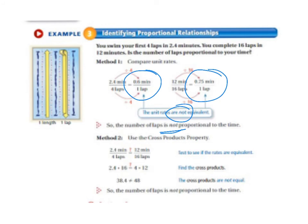Method 2, you're going to use the cross products property. So this is one of those things where you can do either one. So you line up your two. You have to be sure that you have minutes on the top and laps on the bottom in both fractions. So you don't want to mix up your units.